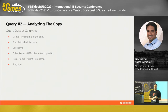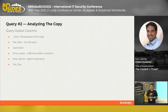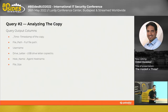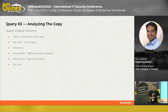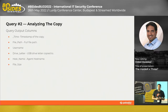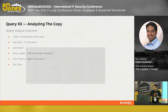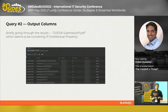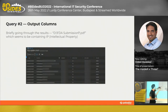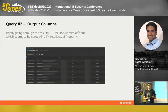This is where we pivot to query number two — analyzing the copy. The columns help us understand what was copied: timestamp of the copy, full path of the file, username, drive letter, hostname, and file size. An example output related to the FDA submission case shows that the directory called 'FDA submission' was copied to a USB drive a few days prior to the user's termination.